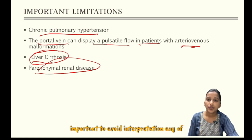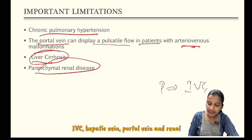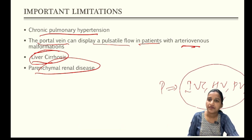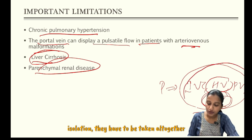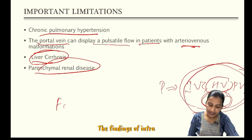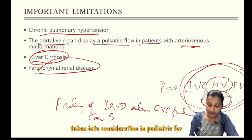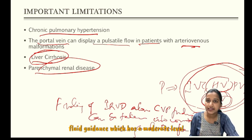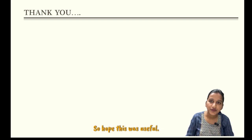Considering these limitations, it is important to avoid interpreting any of these findings in isolation. Performing the entire protocol including IVC, hepatic vein, portal vein, and renal vein increases the accuracy of the evaluation — none of the findings can be taken in isolation; they must all be taken together and interpreted. The findings of intrarenal venous Doppler along with CVP findings can be taken into consideration in pediatrics for fluid guidance, which has a moderate level of evidence. This VEXUS protocol has also been shown to predict AKI. Hope this was useful. Thank you.